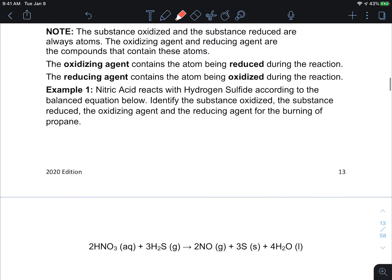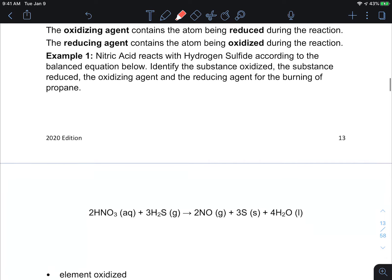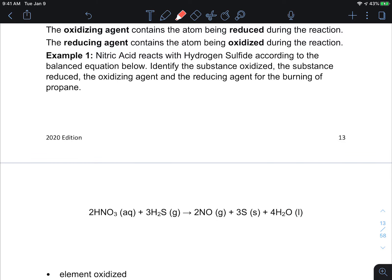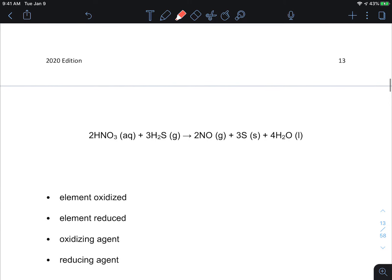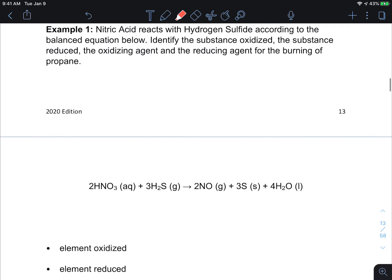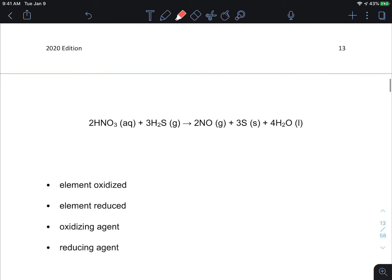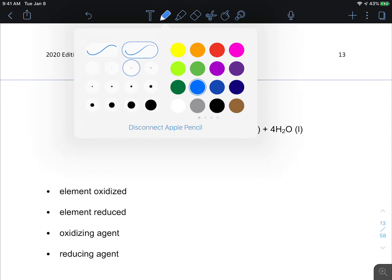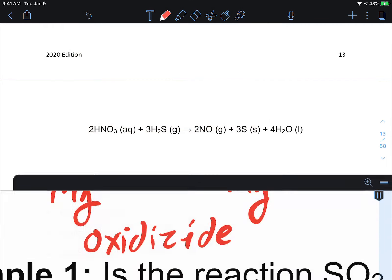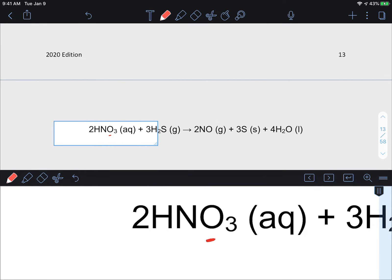Okay so let's do an example. Nitric acid reacts with hydrogen sulfide according to the balanced equation below. Identify the substance that is oxidized, the substance reduced, the oxidizing agent, and the reducing agent. So we have some nitric acid here and we're going to look for what is being reduced. So let's do a little bit of work here, figure out what we've got going on.